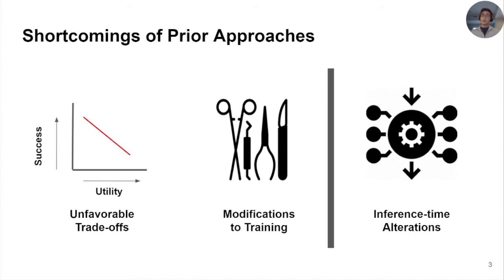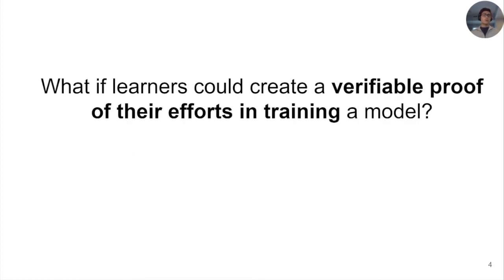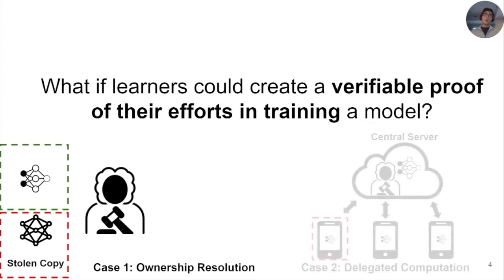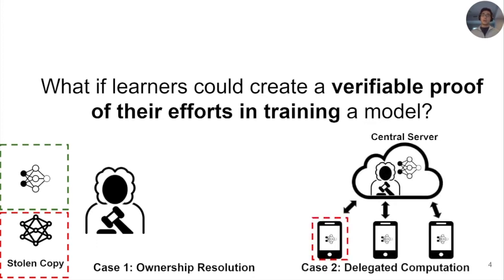Verifiable computations require inference time alterations, such as changes to architectures or restrictions on what operations can be used. These unfavorable side effects led us to the question, what if learners could create a verifiable proof of their efforts in training a model? If they could, they could provide these proofs to arbitrators to resolve ownership conflicts, or central servers could use them to verify if the delegated computation was performed correctly.